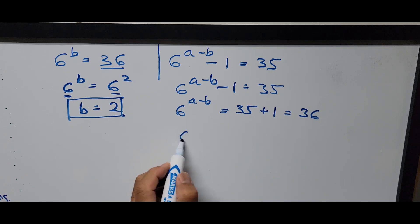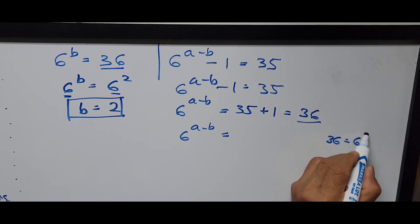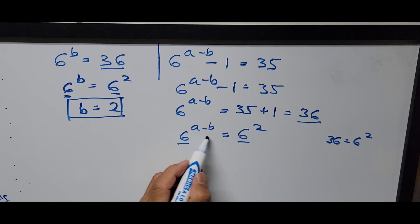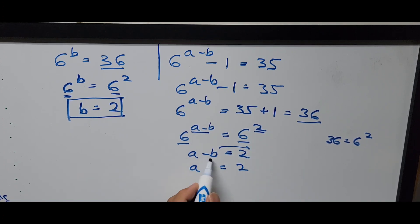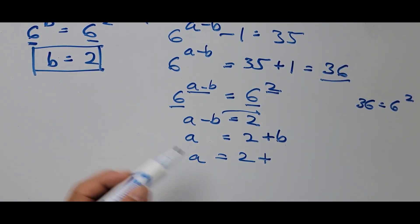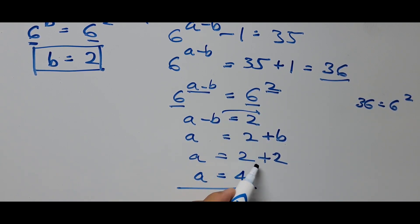Since 36 is 6 squared, and we now have the same base, we equate the exponents: A minus B equals 2. Transposing B to the right side gives A equals 2 plus B. Since B equals 2, we have A equals 2 plus 2, so A equals 4. That concludes the first solution.